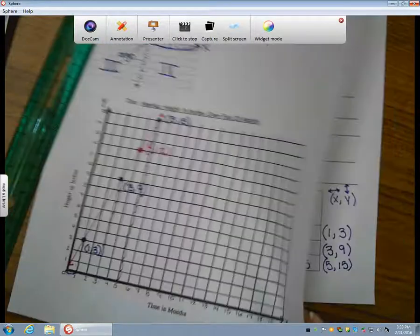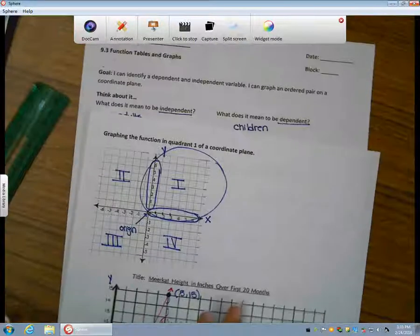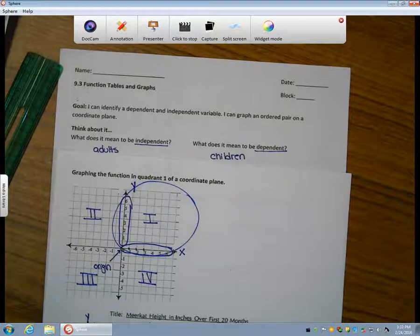Again, today, we learned to identify independent and dependent variables. We completed a function table and graphed the ordered pairs on a coordinate plane.